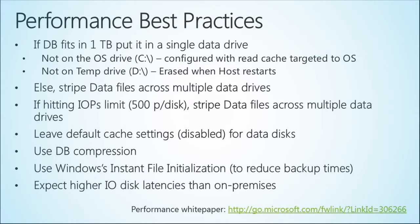In the next session we'll go into detail on performance. A couple of things for now: if your database fits in one terabyte, just create a single data drive. The data drive has a limit of one terabyte, and you can have up to 16 drives or 16 terabytes maximum. If your database doesn't fit, you can stripe the data files across multiple disks — similar to what you do on-premise. By striping, you also get larger IOPS limits — there is a 500 IOPS limit per disk, and you get 500 per disk when striping.